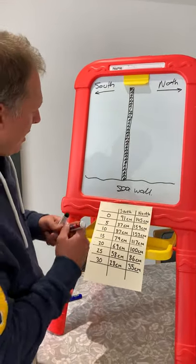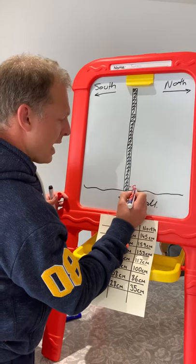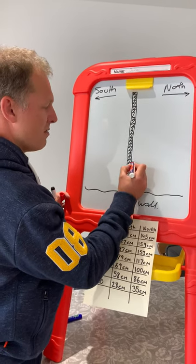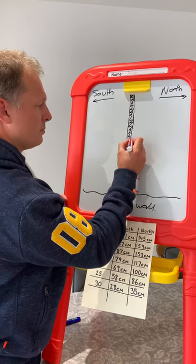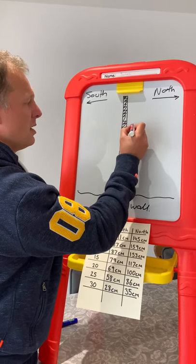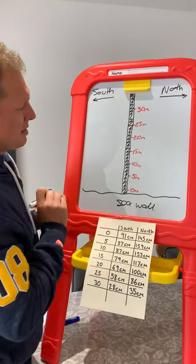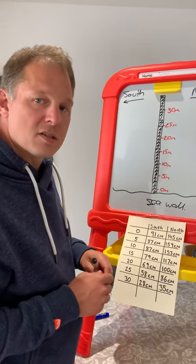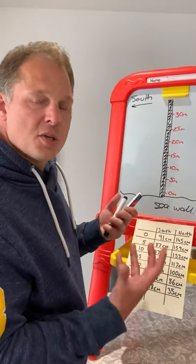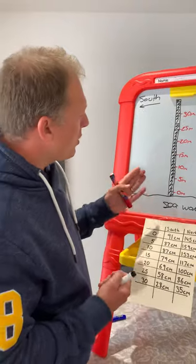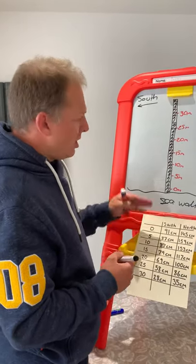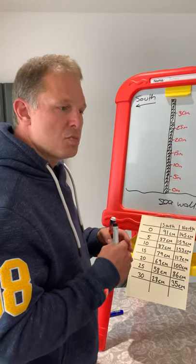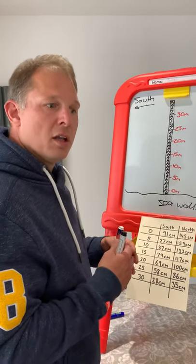What I did was start at zero metres on the groin and move out, taking a measurement every five metres: zero, five, ten, fifteen, twenty, twenty-five, thirty metres. I didn't go all the way to the end — groins can be anywhere between thirty and sometimes a hundred metres long, so I did the first thirty metres on both sides. We're going to take this information and create a bar chart for each side to look at which side of the groin has the most deposition. The side with the smallest number is the side with the largest amount of deposition.